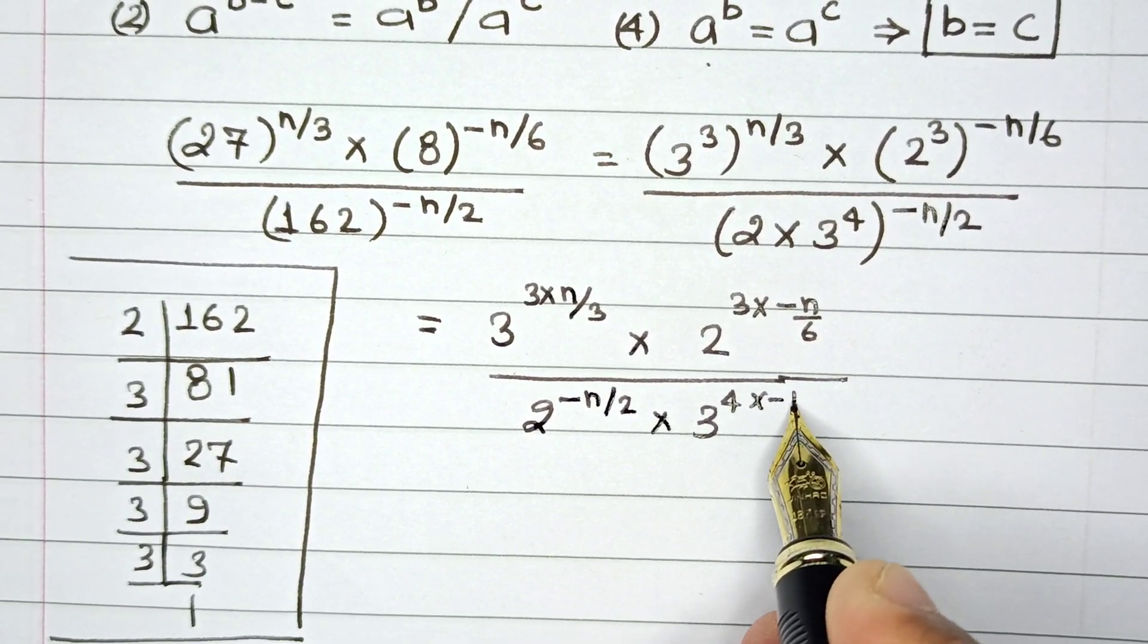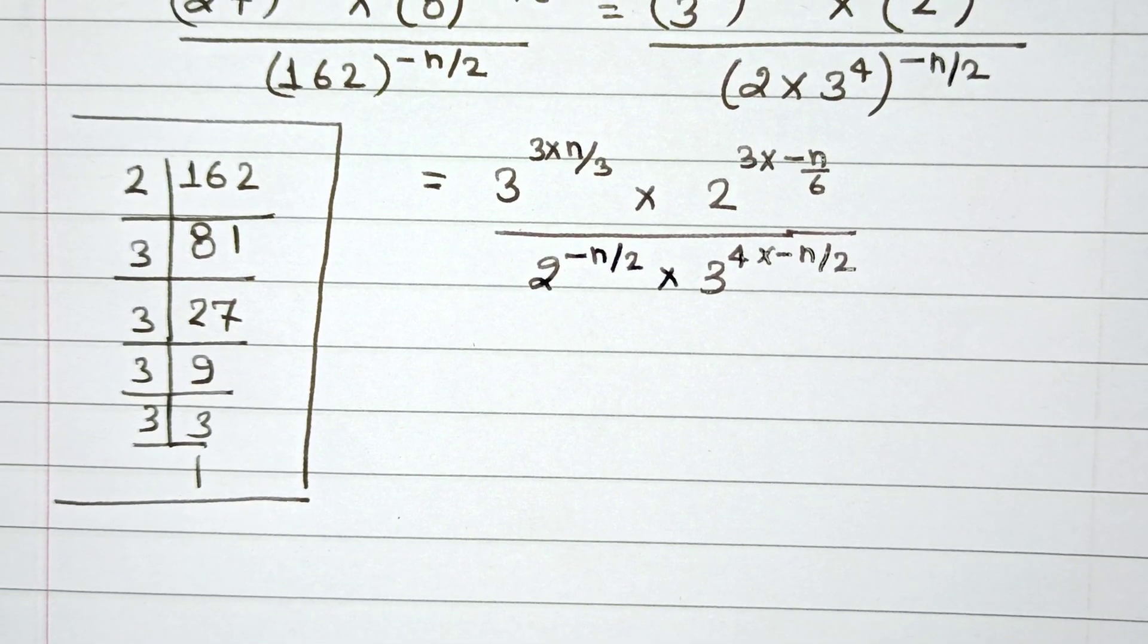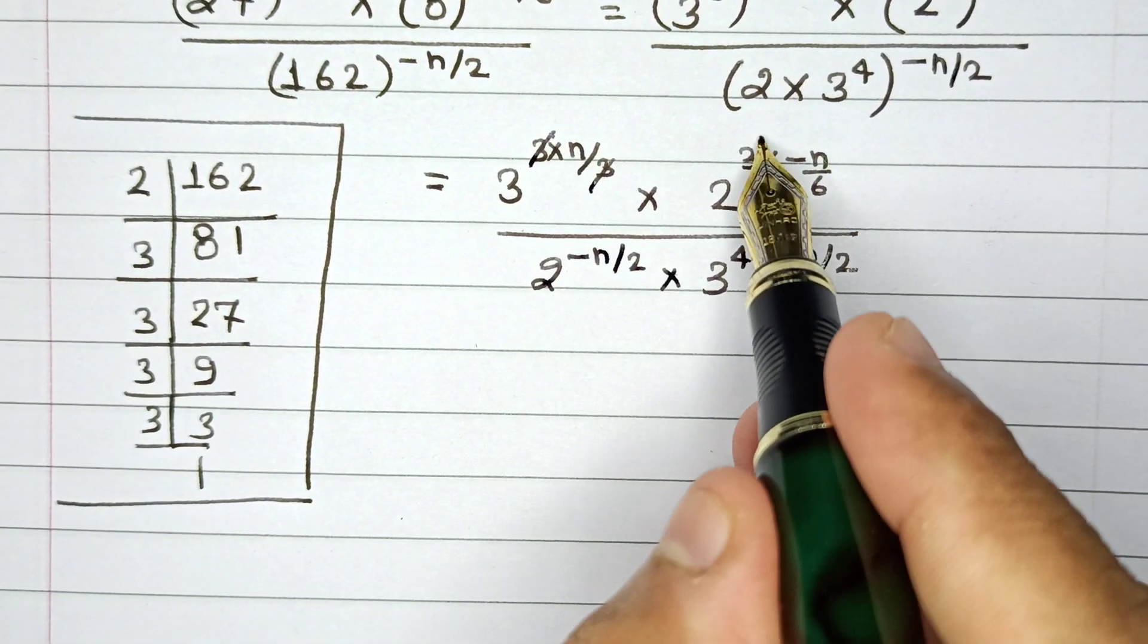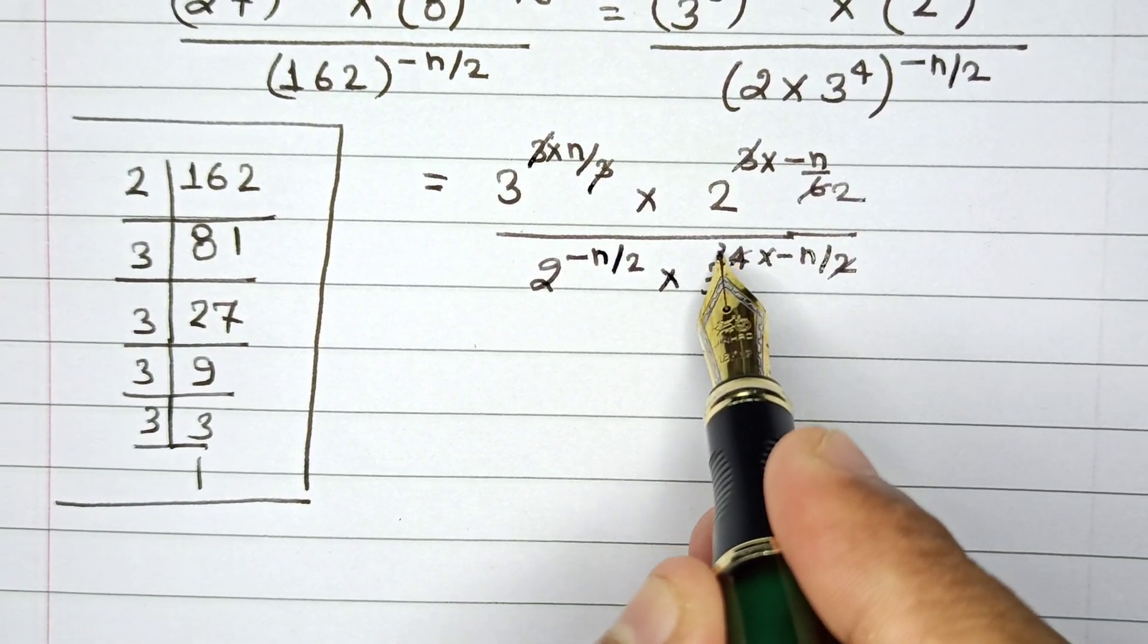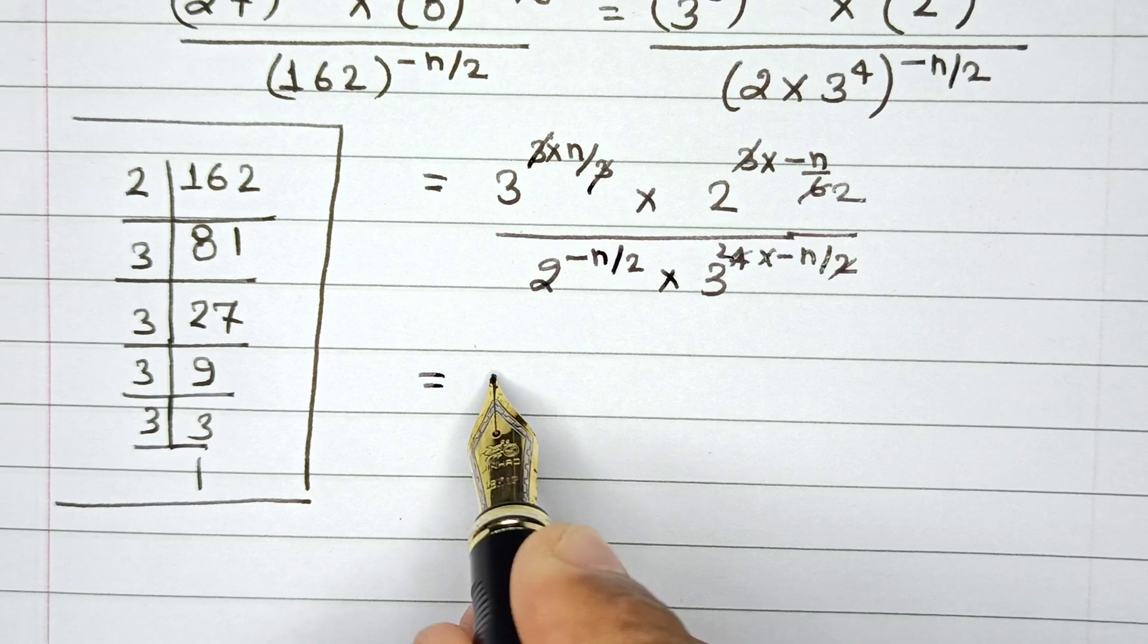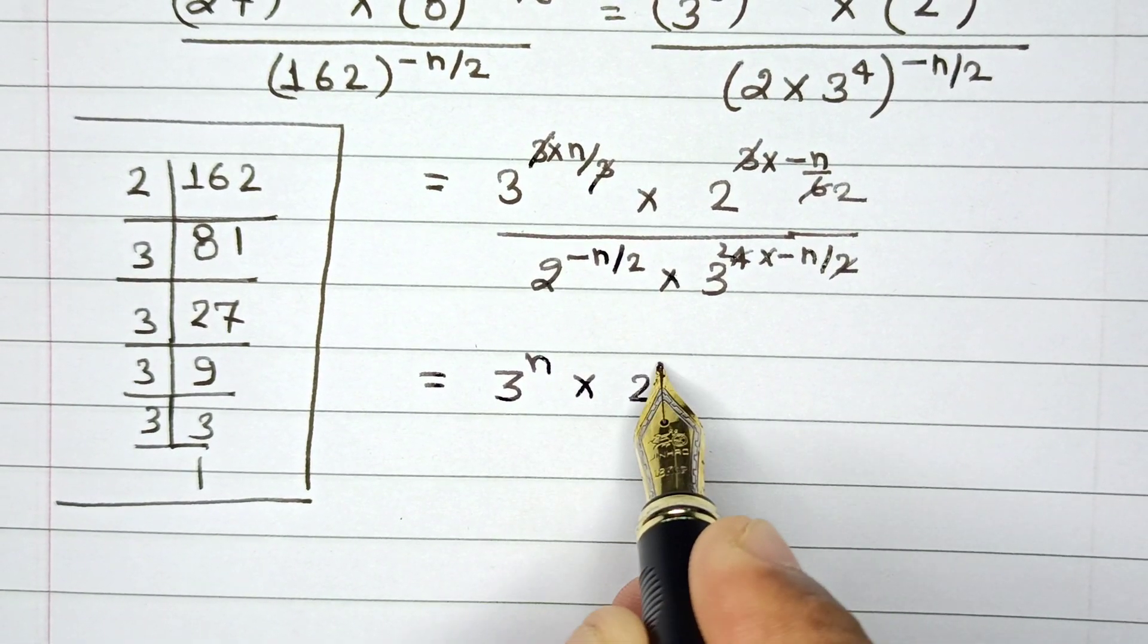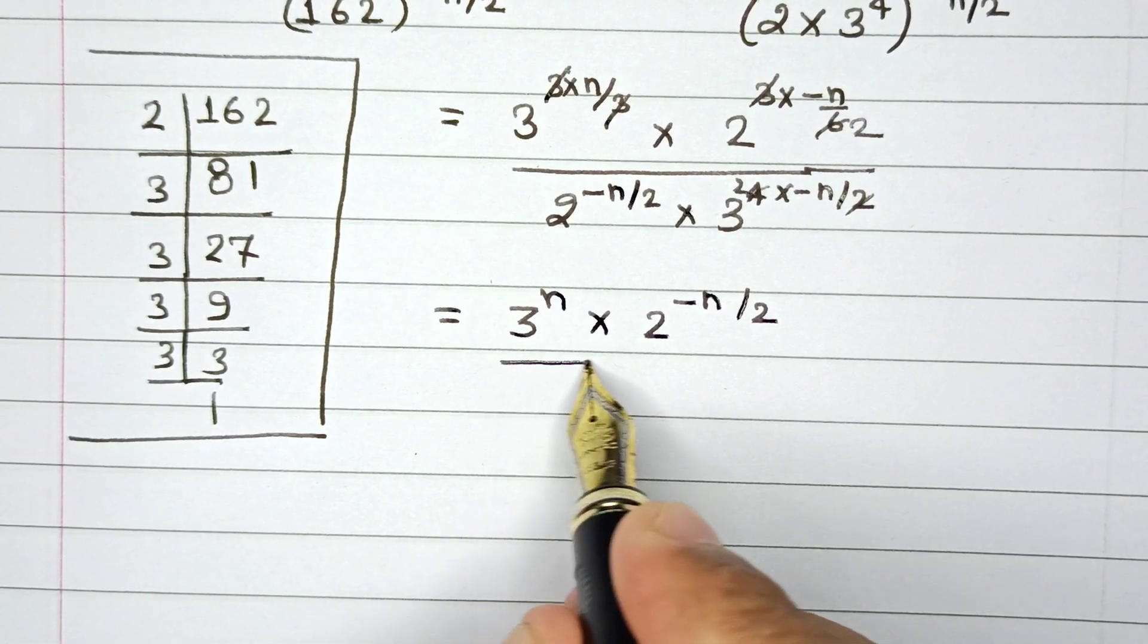...and now this can be written as 2 raised to the power of minus n by 2 multiplied by 3 raised to the power of 4 multiplied by minus of n by 2. So as you can see I have basically diluted down every single power using the properties. Let me cancel this 3 by this 3, this will be 3 to the 6, and then we'll have 2 times of 4. So all we are left with is 3 raised to the power n in the numerator multiplied by 2 raised to the power minus of n by 2...